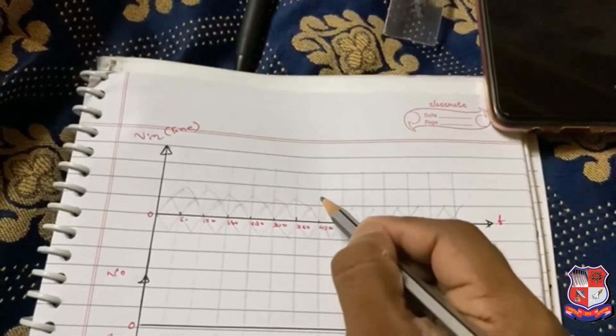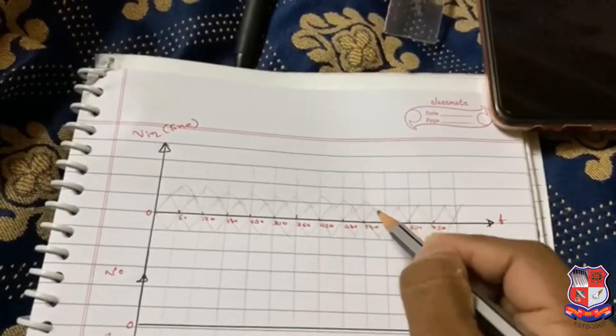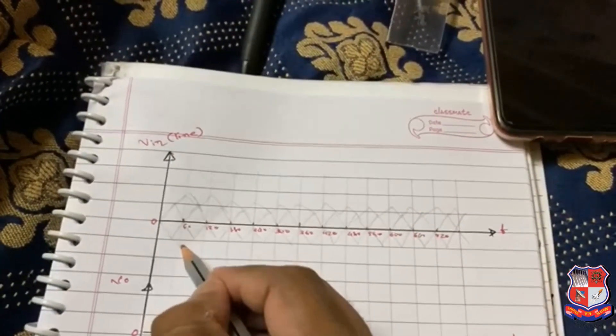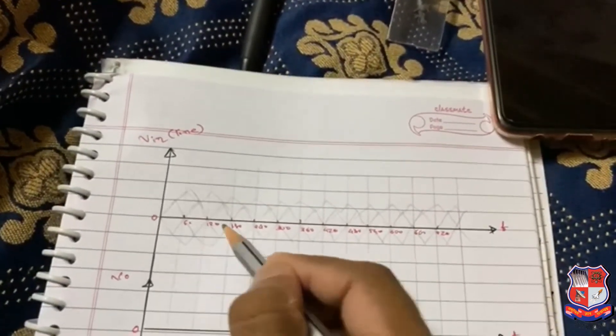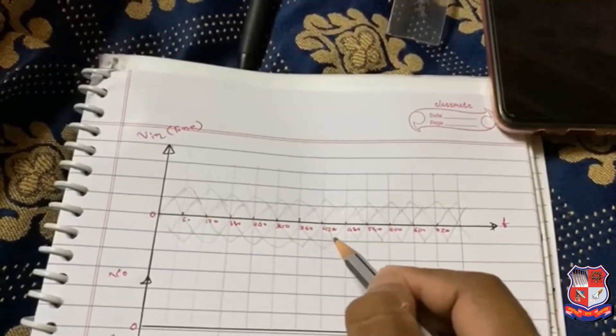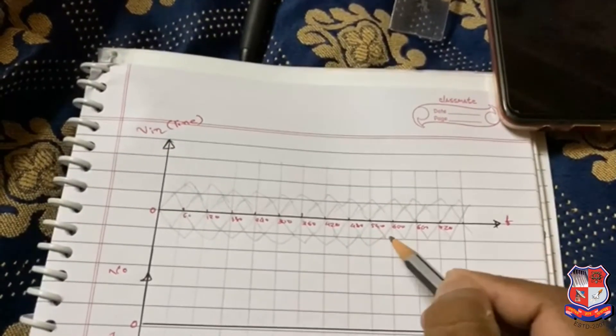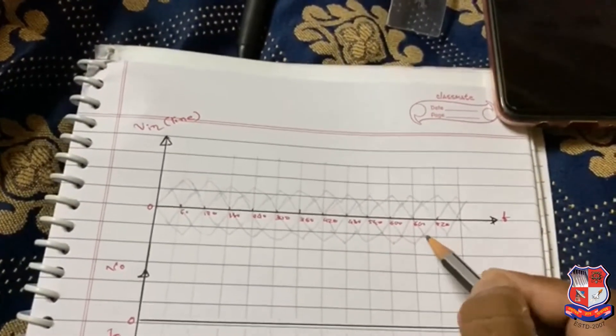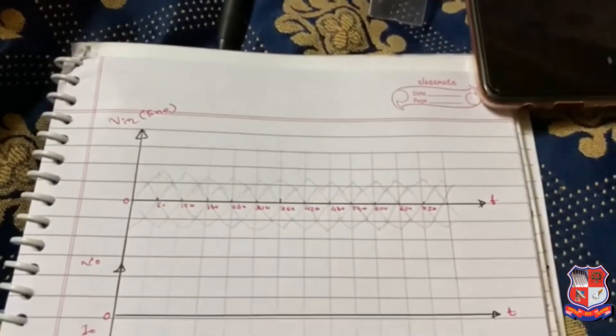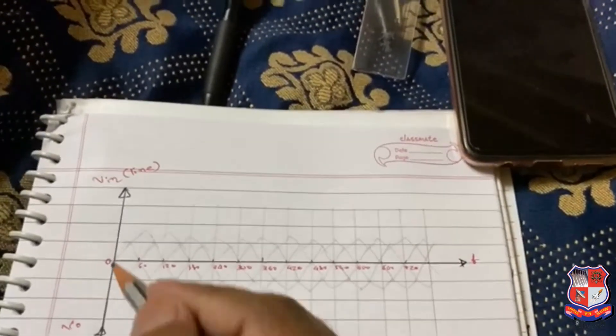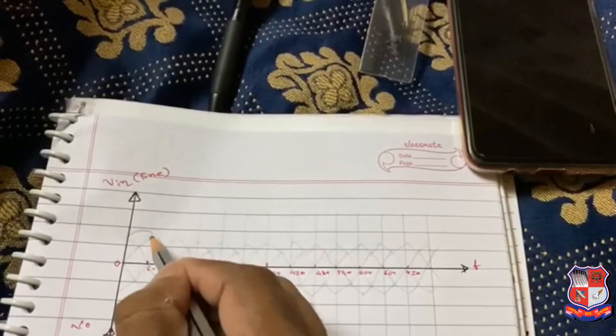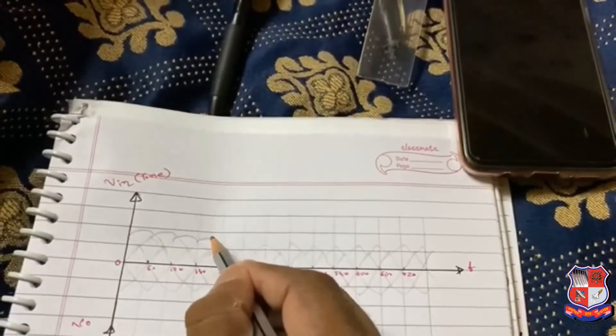After this, connect these two tips of the triangles like this, then connect all the tips like this.